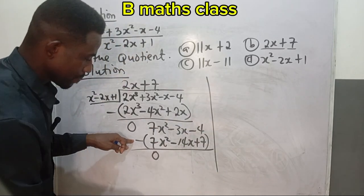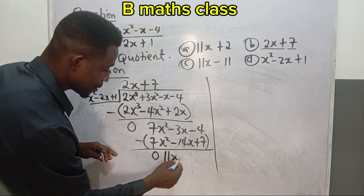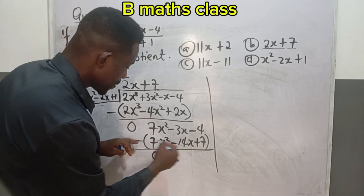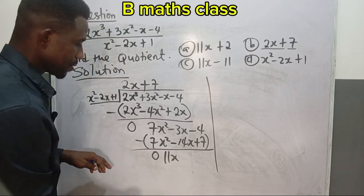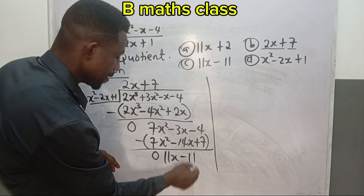Minus times minus is plus, 14 minus 3 is 11x. Then minus times plus is minus, so -7 - 4 is -11.